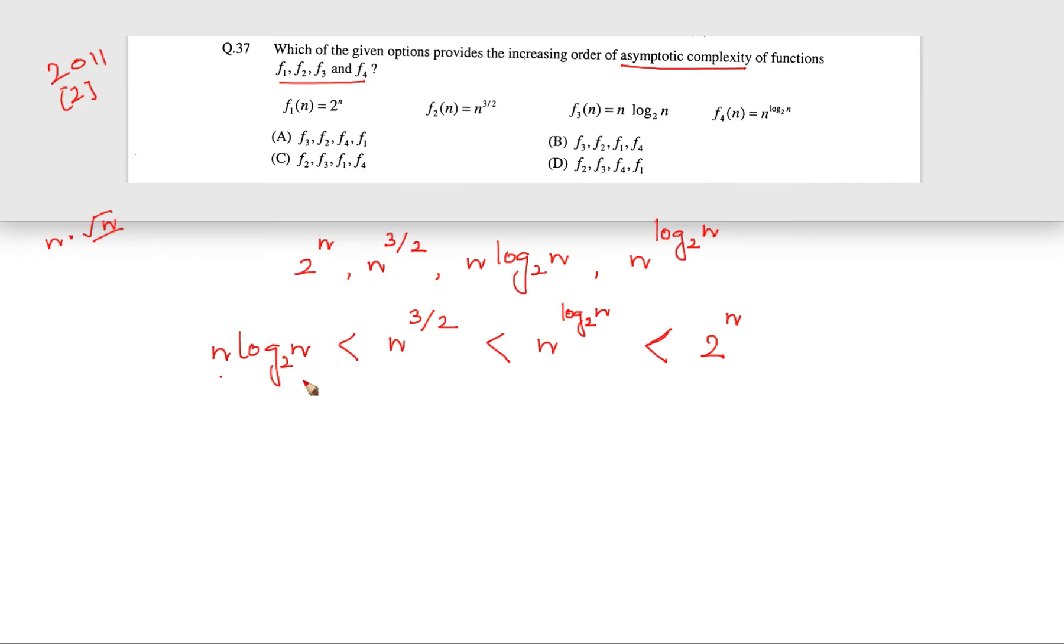So now we have got the ordering. Now let us see what are these functions. n log n is basically f3, this is basically f2, this is basically f4 and this is basically f1. So this is the inequality and we will look for an answer f3 smaller than f2, smaller than f4, smaller than f1. So this is the increasing order of asymptotic complexity and that is why the answer is option C.